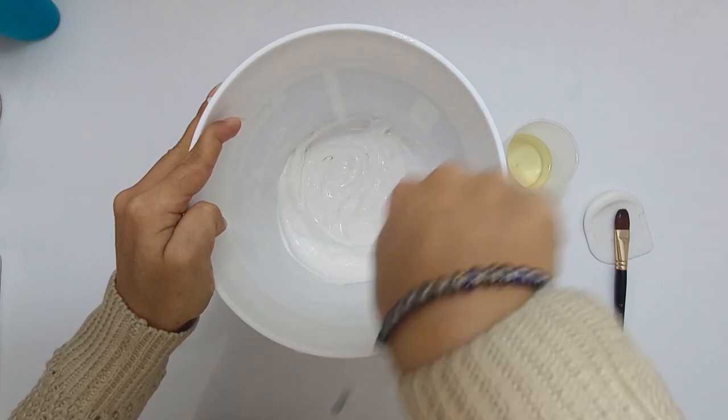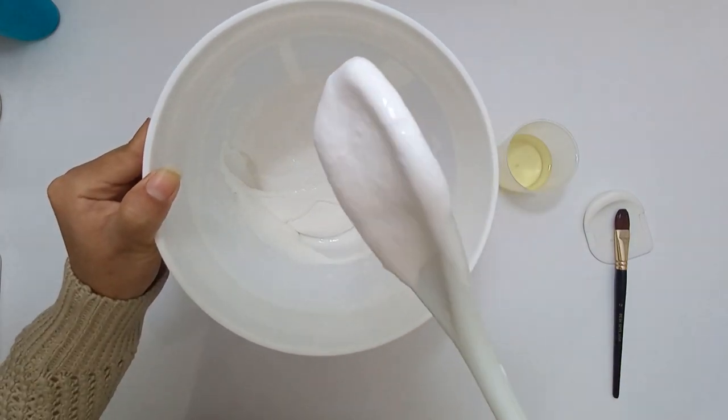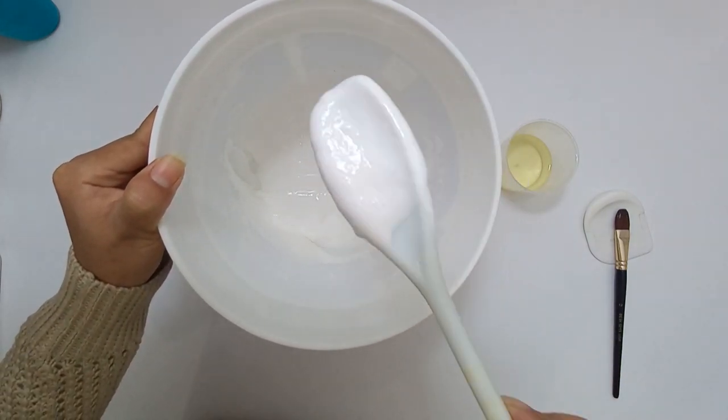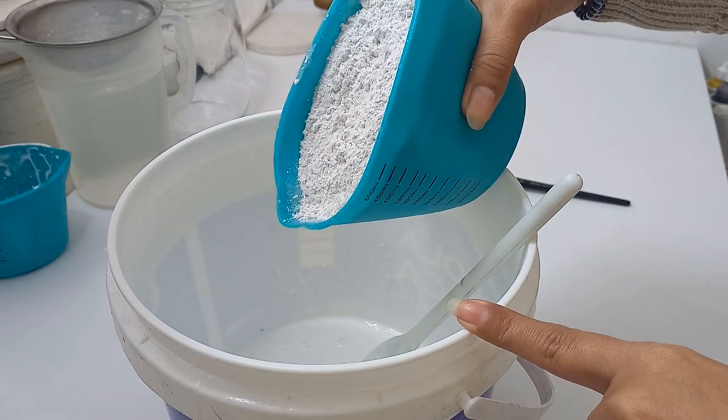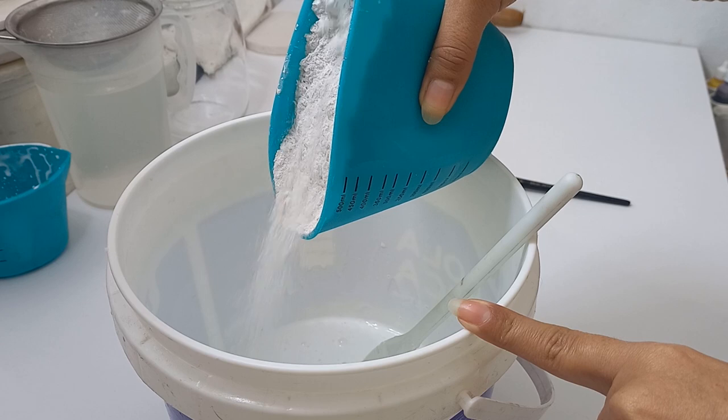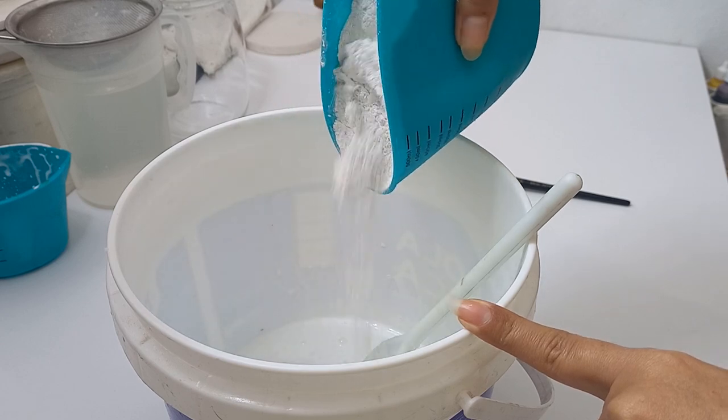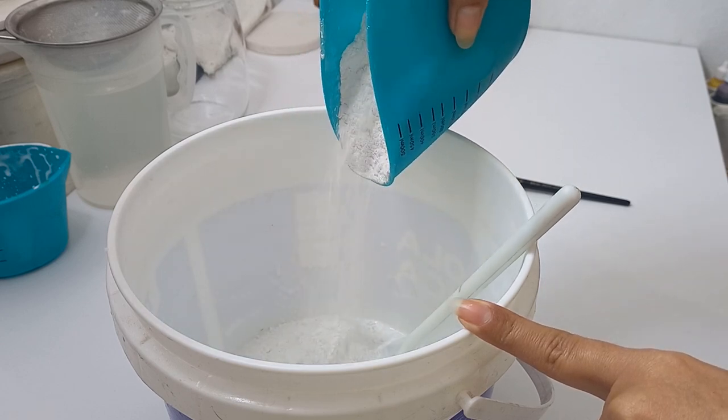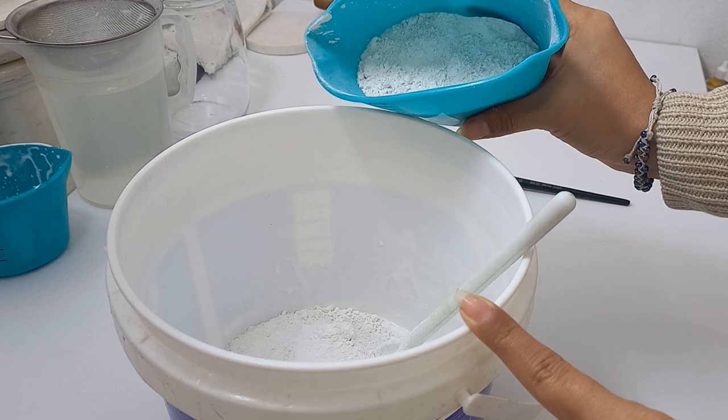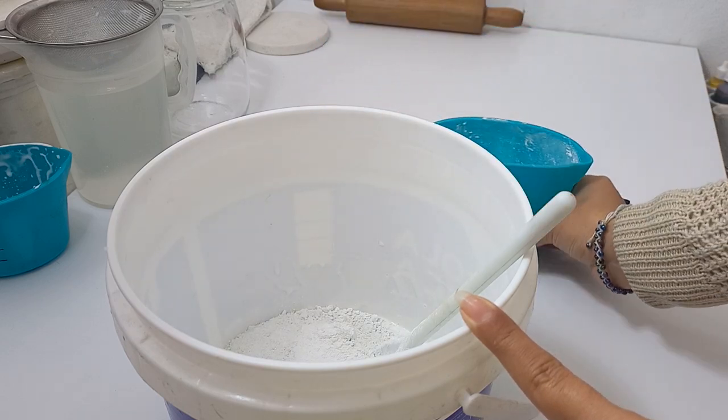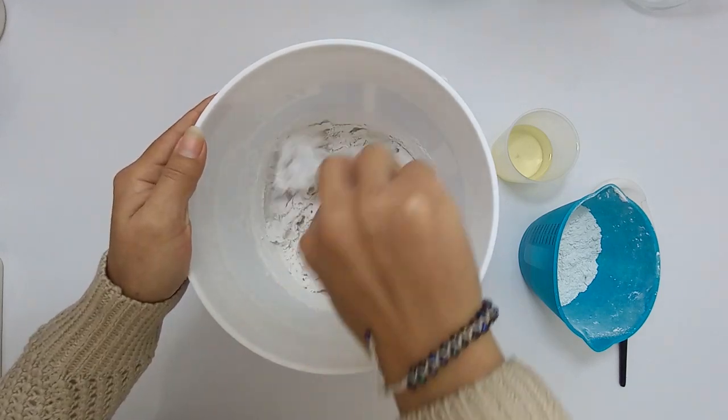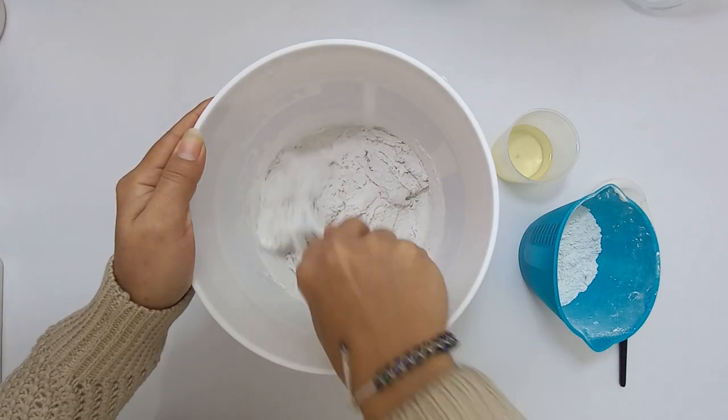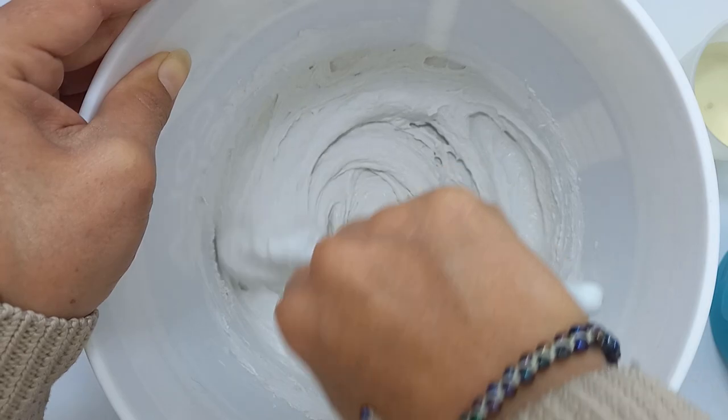Now we're going to add just half of the chalk powder to make the mixing easier. We're gonna keep that for later. We're gonna stir our ingredients until we have a homogeneous mixture just like this.